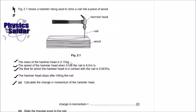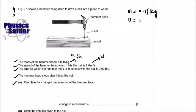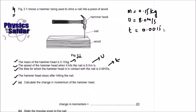The mass of the hammer head is 0.15 kilograms. The initial speed is 8.0 meters per second. The time of contact t equals 0.0015 seconds. The hammer head stops, so the final velocity is zero.